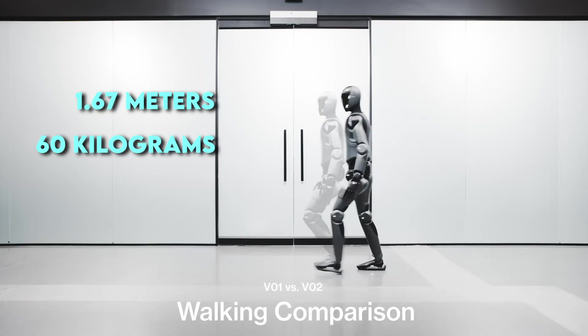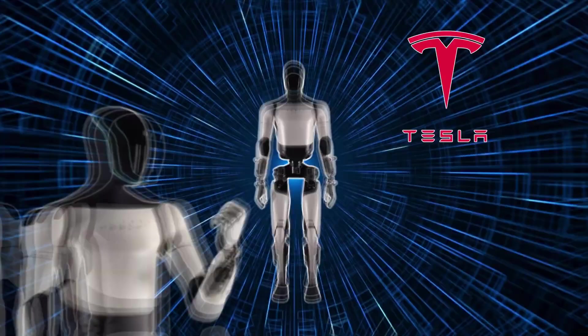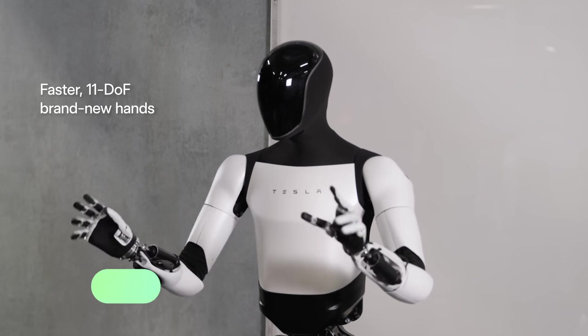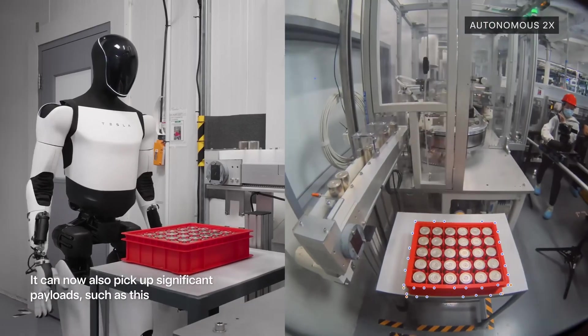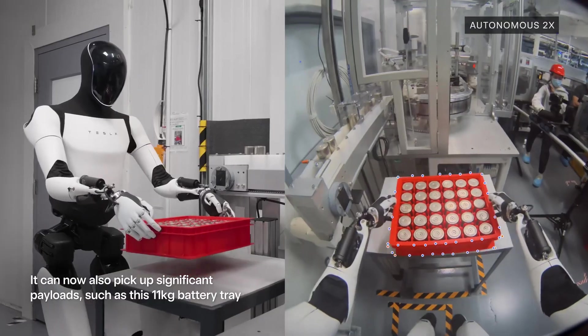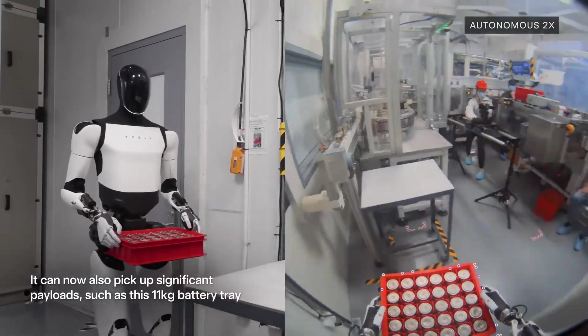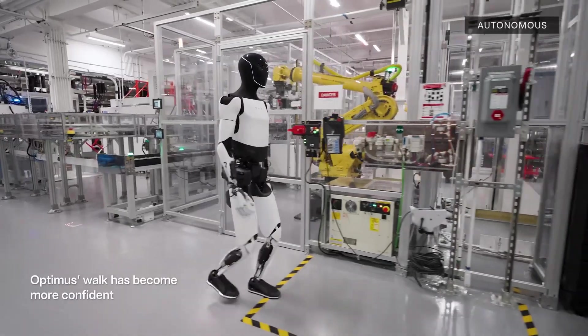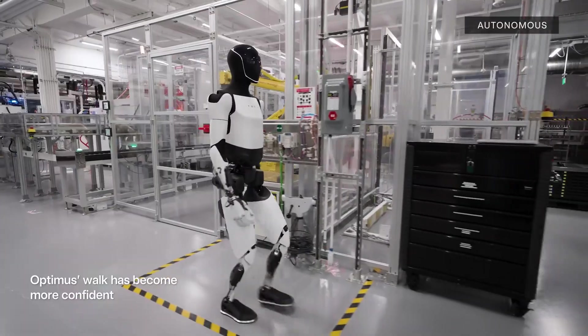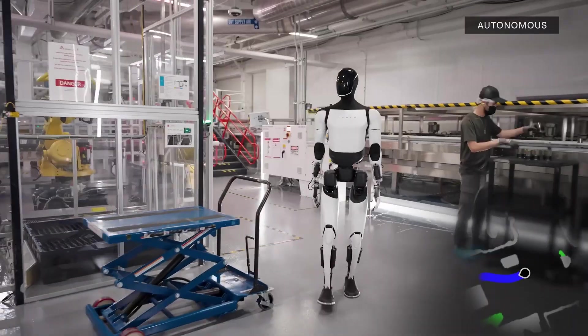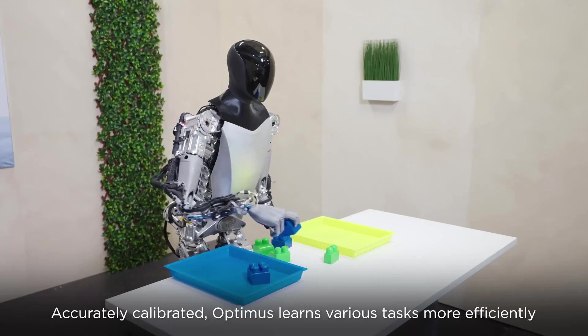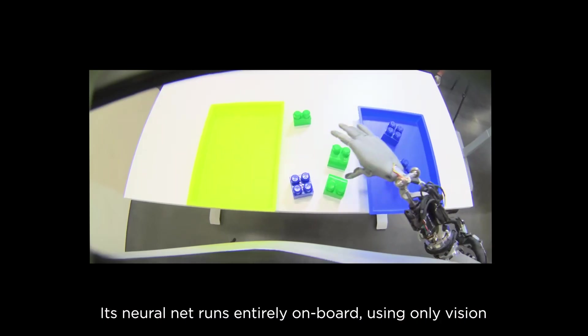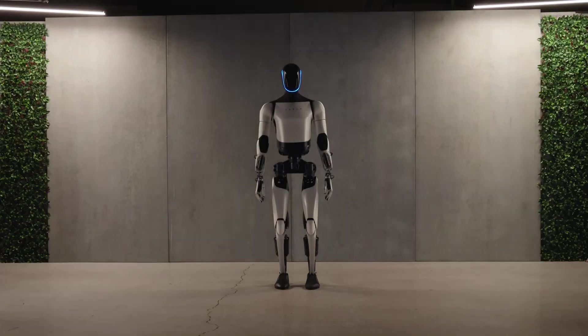Number 5: Optimus by Tesla. Tesla's Optimus project continues to evolve. In early 2025, Tesla released new footage showing Optimus autonomously sorting battery cells and moving components inside an undisclosed factory, marking one of the first confirmed use cases in Tesla's own operations. Optimus relies on Tesla's proprietary actuators and vision stack, the same infrastructure that underpins its Full Self-Driving technology.